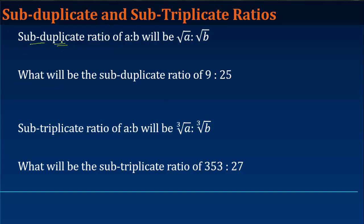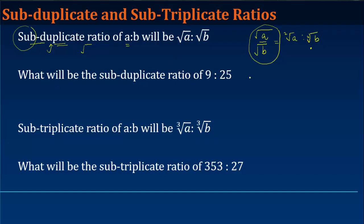The subduplicate ratio is the square root of a given ratio. So if you have a/b, you take the square root of both numerator and denominator to get √a:√b. 'Sub' means root and 'duplicate' means twice, so we take the second root. For example, the subduplicate ratio of 9:25 — we take √9 = 3 and √25 = 5, giving us 3:5.